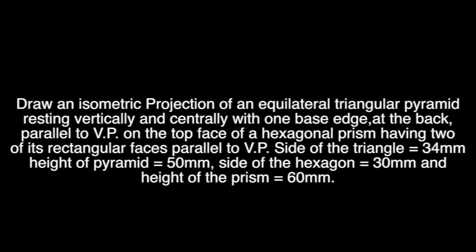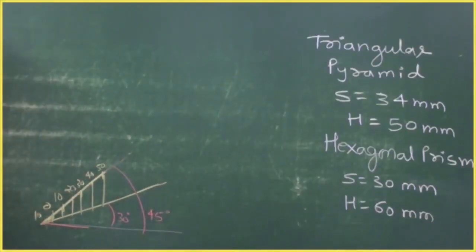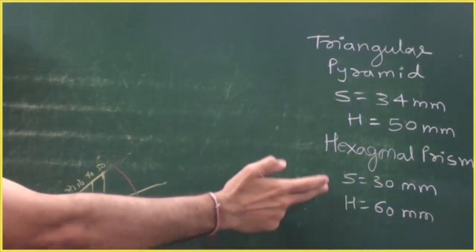We are solving example number 1.24 from NCERT Engineering Graphics for 12th standard. They have said: draw an isometric projection of an equilateral triangular pyramid resting vertically and centrally with one of its base edges at the back, parallel to VP, on the top face of a hexagonal prism having two of its rectangular faces parallel to VP. Side of the triangle is 34 mm and height of the pyramid is 50 mm. Side of the hexagon is 30 mm and height of the prism is 60 mm. First we need to draw a helping figure.